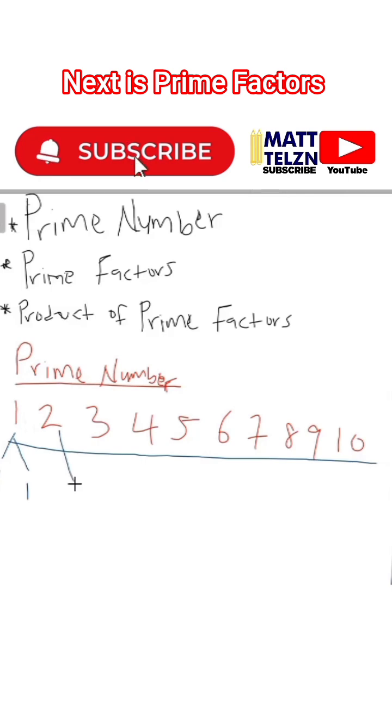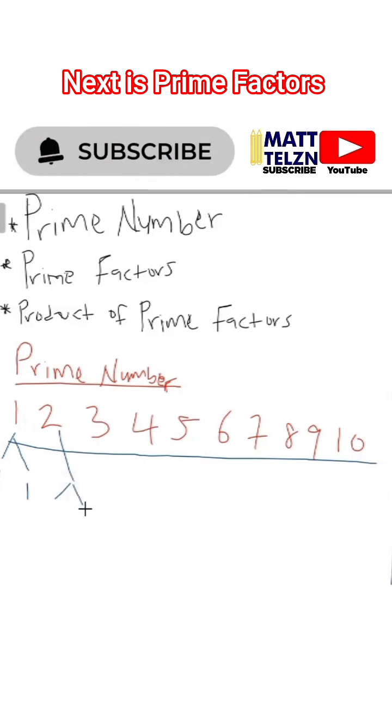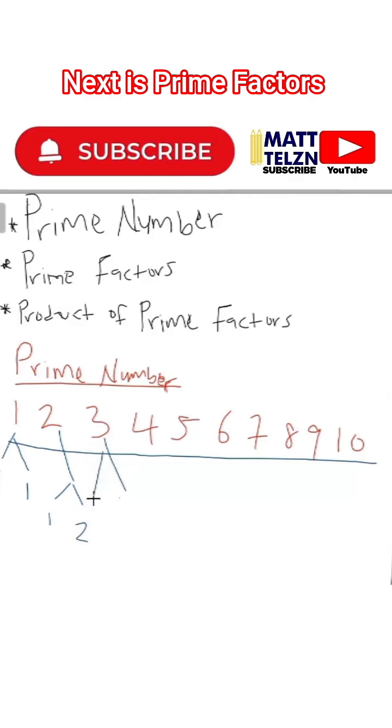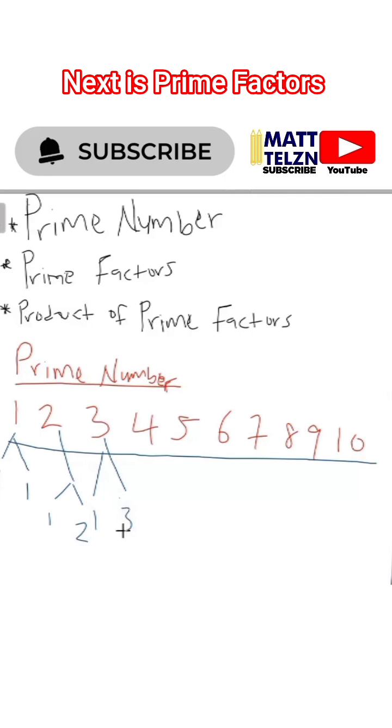The factors of two are what? Just one and two. The factors of three are what? Just one and three.